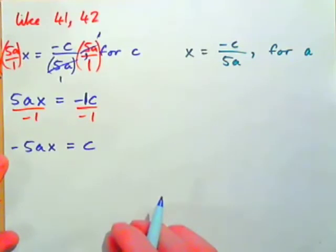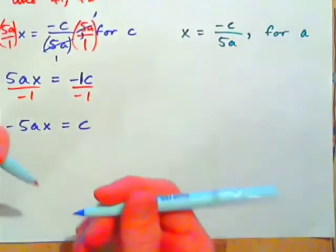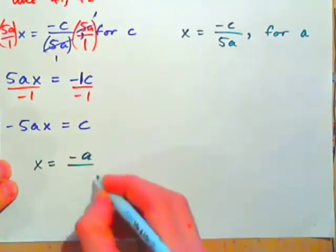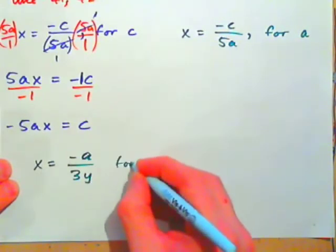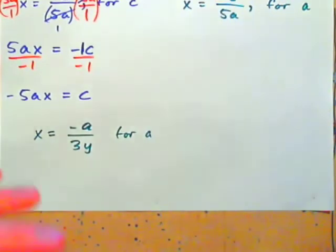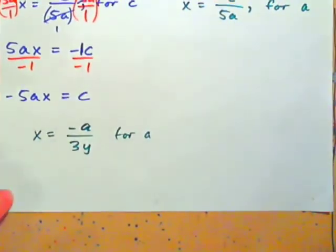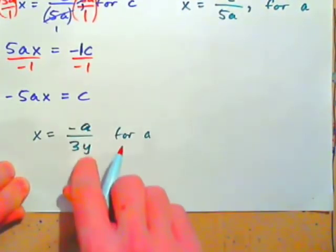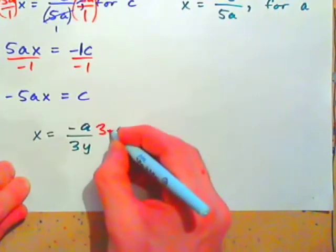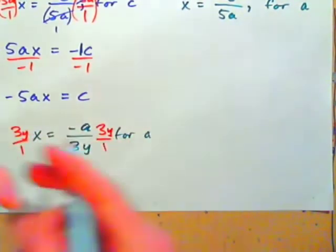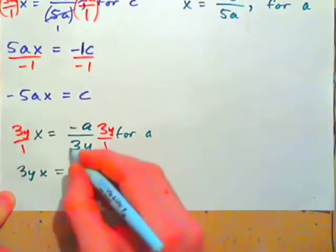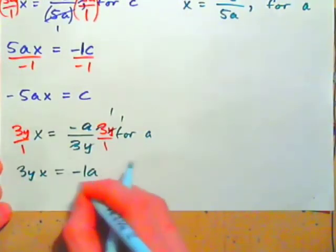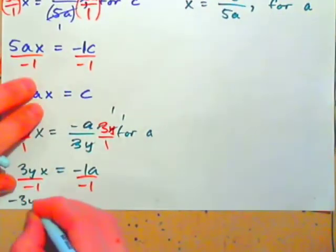For example: X equals negative A over 3Y — solve for A. Undo dividing by 3Y first: multiply both sides by 3Y. The 3's and Y's cross-cancel, giving 3YX equals negative A. That's negative 1 times A, so divide both sides by negative 1, giving negative 3YX equals A.